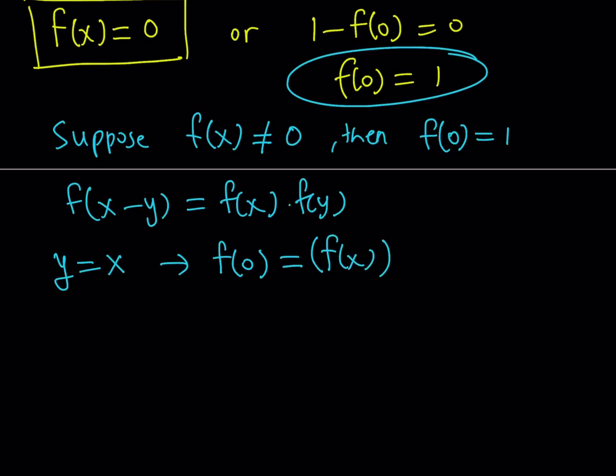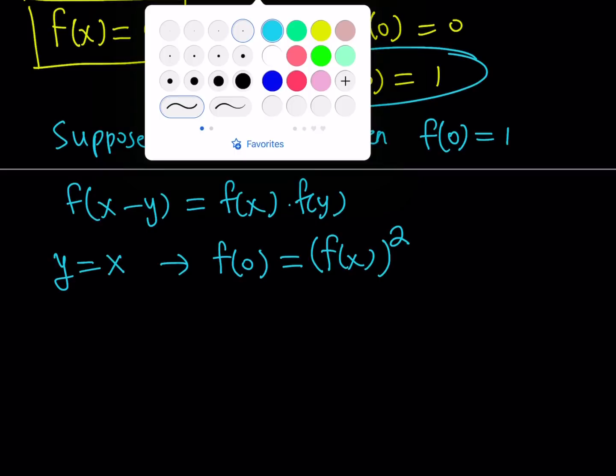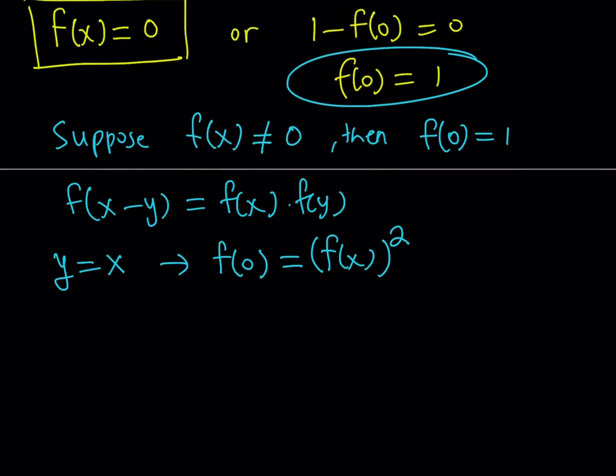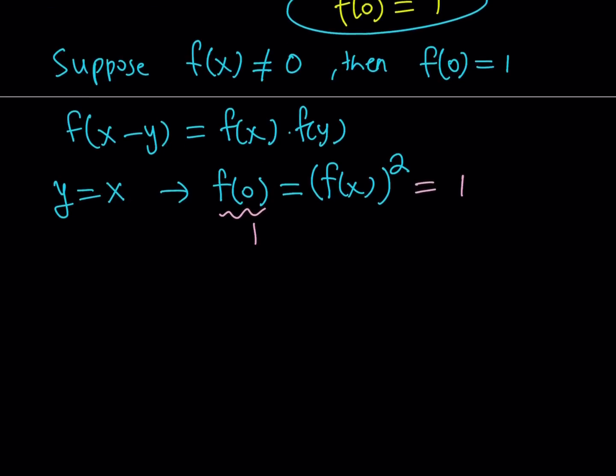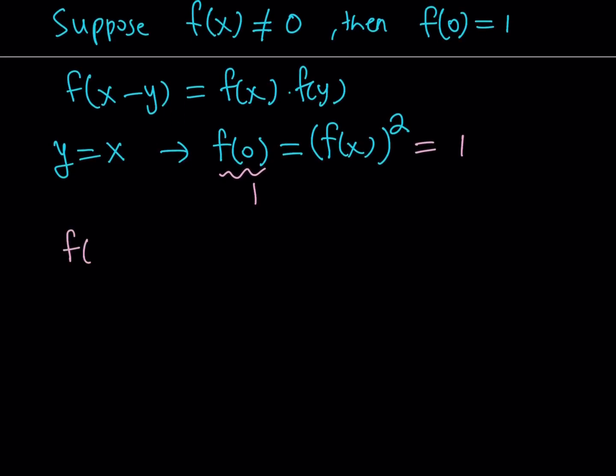What is so good about this? Because we do know that if f of x does not equal 0 then f of 0 has to equal 1, so we know that this is equal to 1. What does that imply? It implies two things: either f of x is equal to 1 or f of x is equal to negative 1.